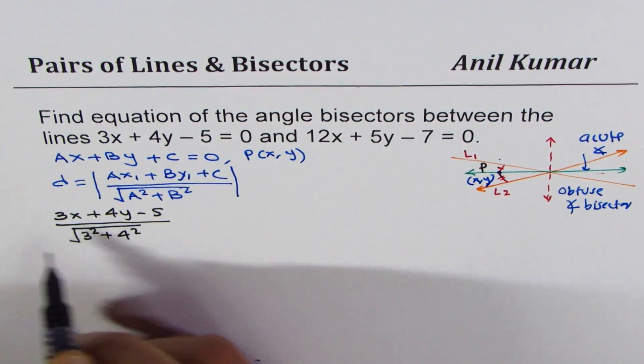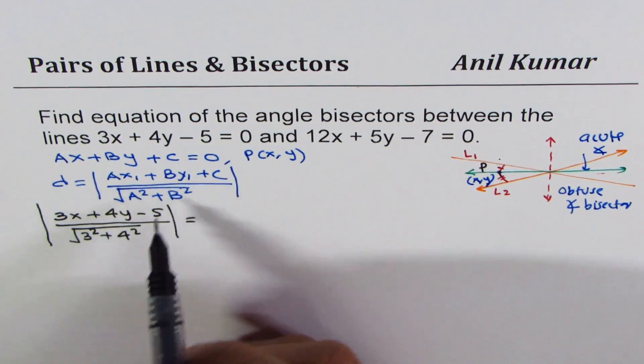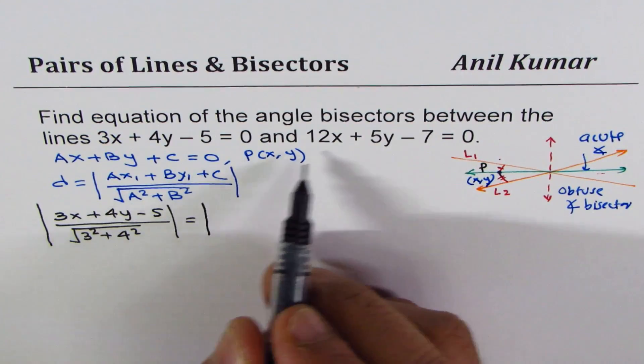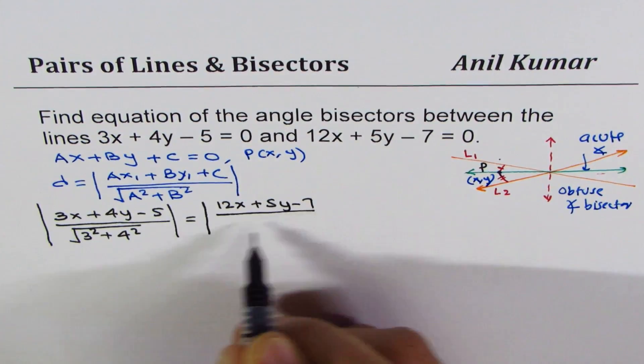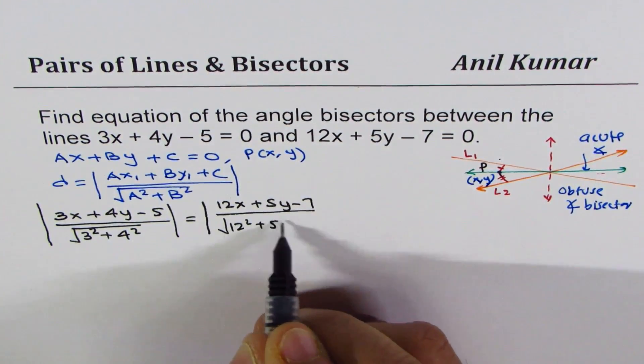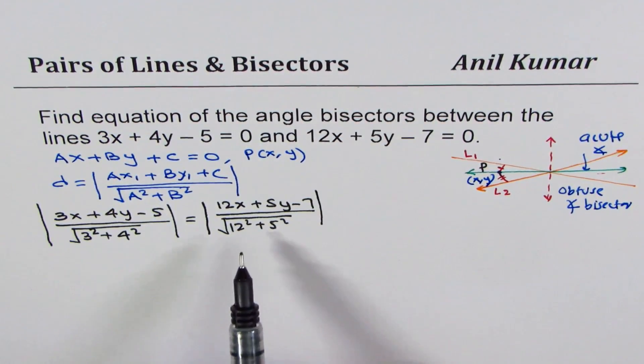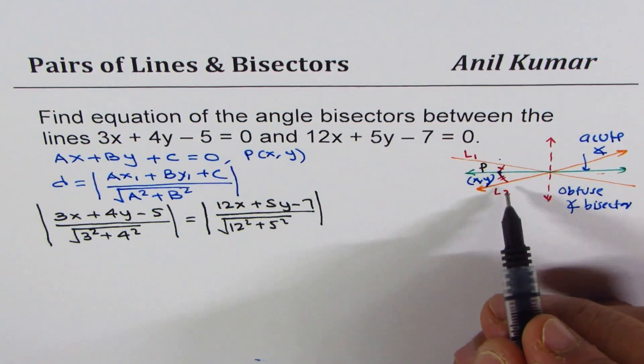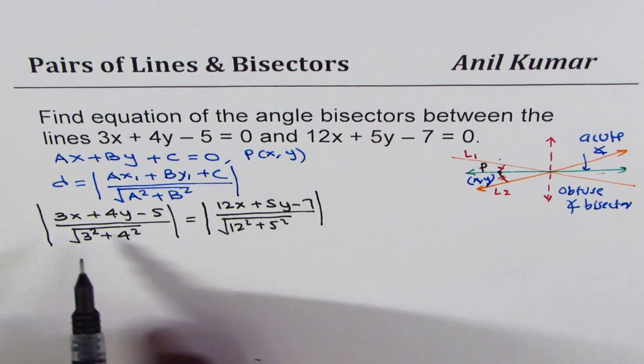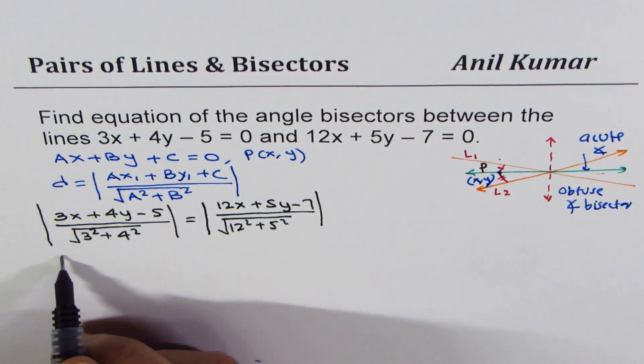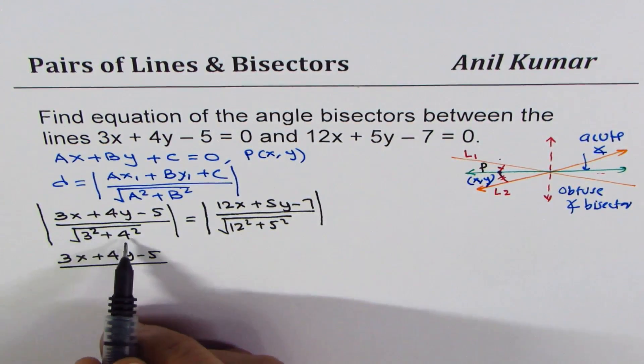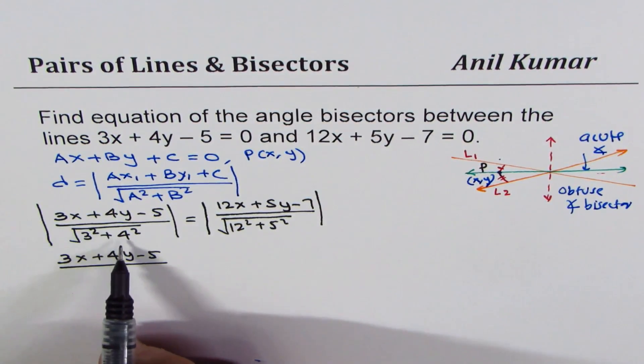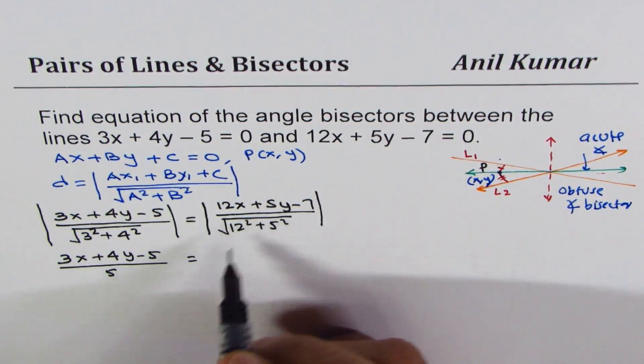This should equal |12x + 5y - 7| / √(12² + 5²). An angle bisector means the same distance from both lines. We can simplify: |3x + 4y - 5| / 5, since 3² + 4² = 5². Similarly, 12² + 5² = 13².